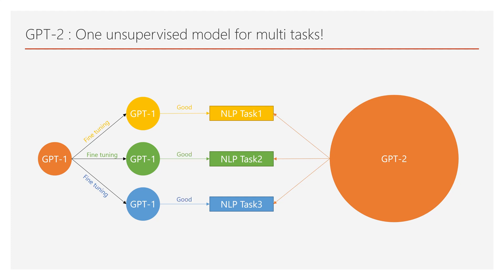Most importantly, while GPT-1 required fine-tuning for each downstream task, GPT-2 can be directly used for any downstream tasks. Fine-tuning was a big drawback of GPT-1. Honestly, fine-tuning is not easy — it takes much time, much effort, and much money. And one fine-tuned model cannot be reused for other downstream tasks either, which is cost inefficient. In contrast, GPT-2 can be directly used for downstream tasks. It is free from fine-tuning.